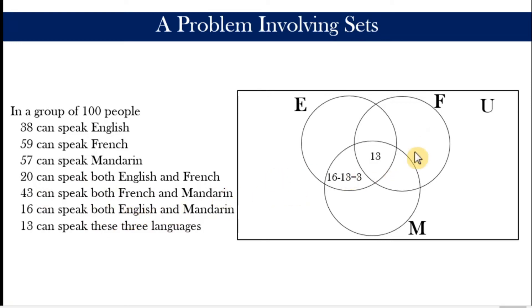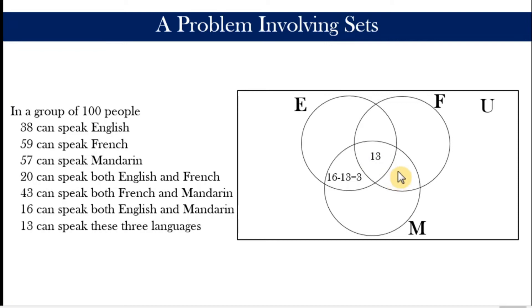Similarly, 43 can speak both French and Mandarin but not English. This is the space for those two languages excluding English. We have already counted 13 in the center, so the number we place in that region is 43 minus 13, which equals 30.